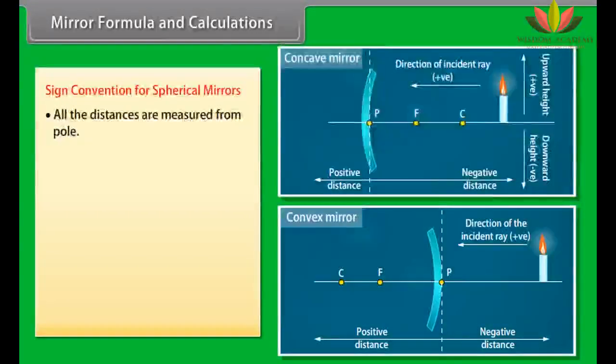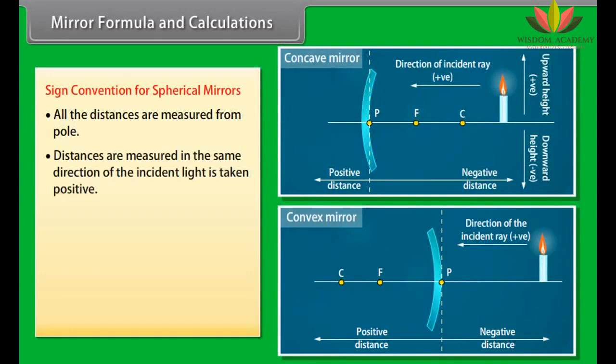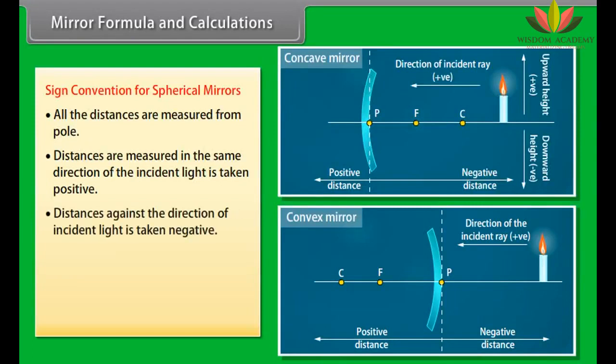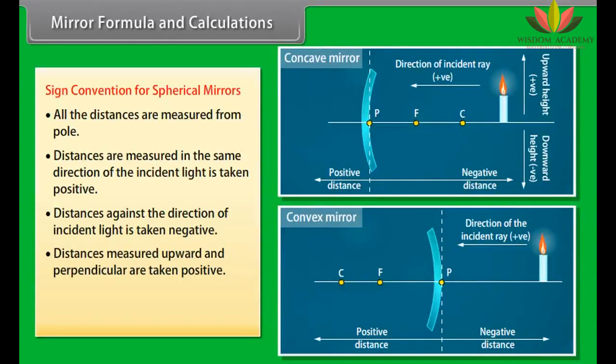Sign convention for spherical mirrors: all distances are measured from the pole. Distances measured in the same direction as the incident light are taken as positive. Distances against the direction of incident light are taken as negative. Distances measured upward and perpendicular to the principal axis are positive. Distances measured downward and perpendicular are taken as negative.